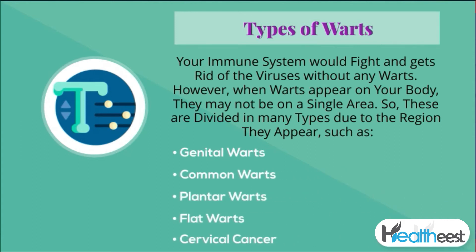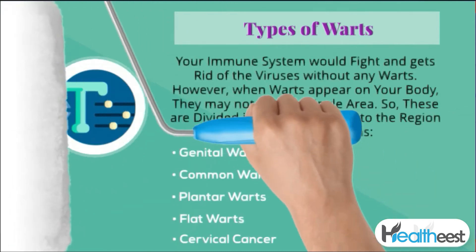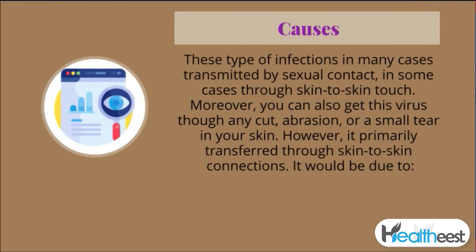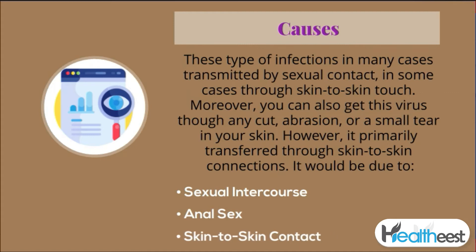Your immune system would typically fight and get rid of the virus without any warts. However, when warts appear on your body, they may not be in a single area. Warts are divided into many types depending on the region where they appear, such as genital warts, common warts, plantar warts, flat warts, and in severe cases, cervical cancer.